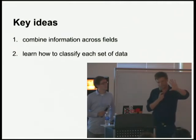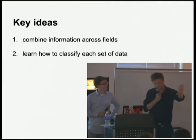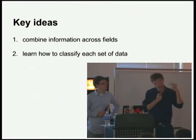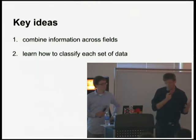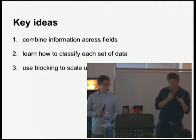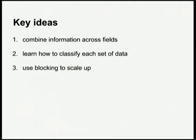We're going to supply some positive and negative examples of duplicate pairs, and then learn the best rules from those pairs. And finally, we're going to use something called blocking to scale up, so we're not going to hit a hard limit at around 10,000 or 100,000 records — we can actually go much further and get results in a reasonable amount of time.